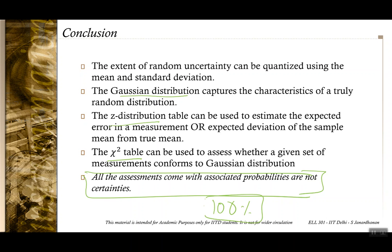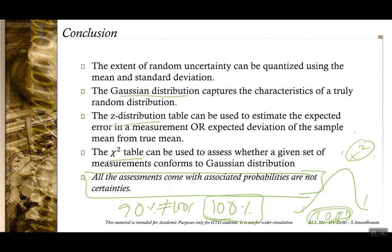It should always be remembered that all these assessments come with associated probabilities, not certainties. We are not 100% sure the error equals any particular value. We are never certain a distribution is Gaussian or not — there is always a chance we have taken a wrong set of points from a truly Gaussian distribution, or concluded something fits Gaussian to 90% when it doesn't. We are never talking about certain values.